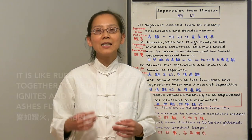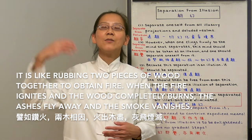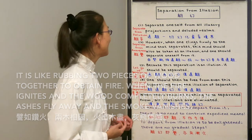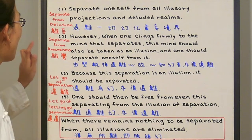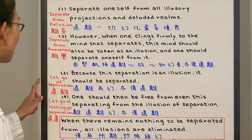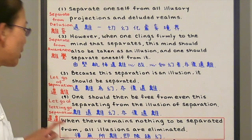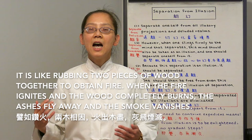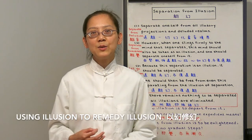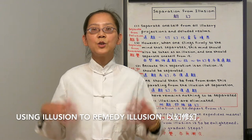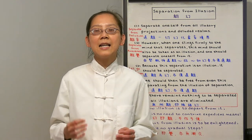This sutra uses another metaphor: it's like rubbing two pieces of wood together to obtain fire. When the wood completely burns, the ashes fly away and the smoke vanishes. The two pieces of wood is like step 1, separation from delusion. The fire is like step 2, separation from awareness. The smoke vanishing is like step 3, let go of separation. And the ashes flying away is like step 4, letting go of letting go. What's left is just the ground that's perfectly unmoved — this ground symbolizes our Buddha nature that is perfectly enlightened. This is called using illusion to remedy illusion: use the illusory body and mind to cultivate the illusory Dharma. That's how we reach enlightenment — that's our innate prajna.